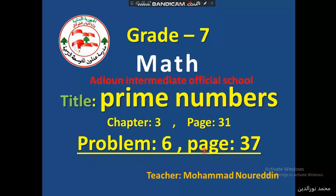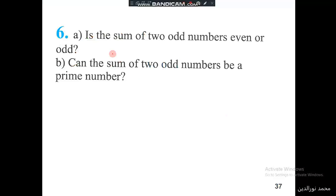Problem 6 on page 37 for the lesson on prime numbers for grade 7: Is the sum of two odd numbers even or odd? So the question is, odd plus odd, what does it give, odd or even?